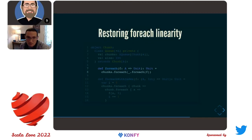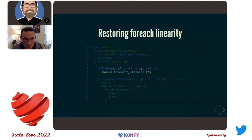That restores the linearity of `forEach` and `forEachWithIndex`, and really what that means is it restores linearity to `map`, `filter`, `collect`, and all of the other operations built off of `forEach` and `forEachWithIndex`. So that was shipped — and this is a fine solution with no gotcha.